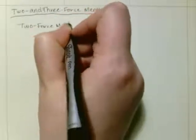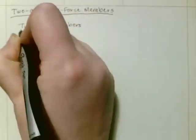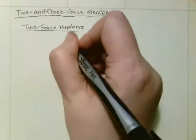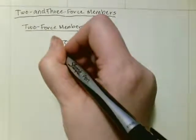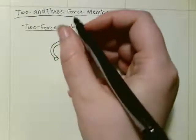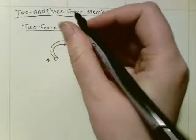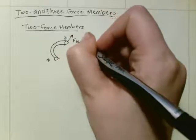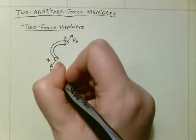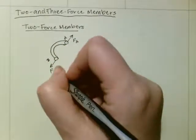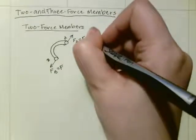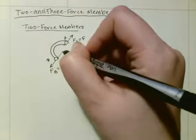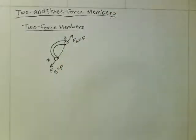So two-force members. If we had a member like this, point A and point B, force A, you had force B. And if force B is equal to F, as well as force A is equal to F, and they are on the same line of action, it's a two-force member.